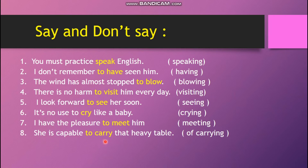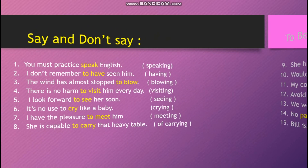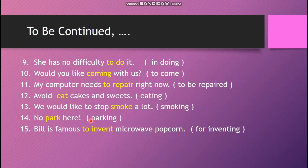Skipping to number eight: 'She is capable to carry that heavy table' — 'capable' should be followed by 'of,' not 'to,' and after 'of' we use the gerund. The correct sentence is: 'She is capable of carrying that heavy table.'